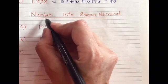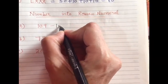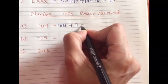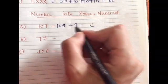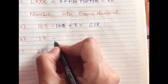And next, normal number into Roman numbers fine. So write it into the expanded form first, 100 plus 9. 100 is C and 9 is 10 minus 1 fine.